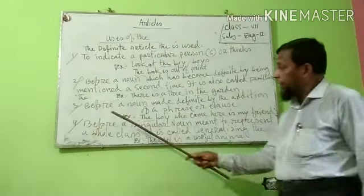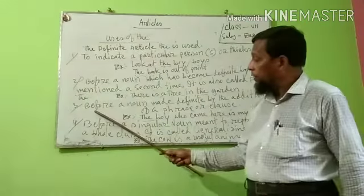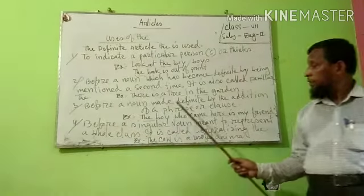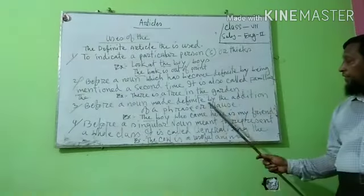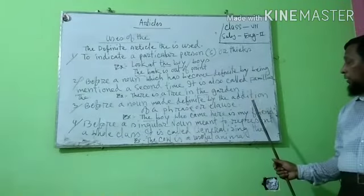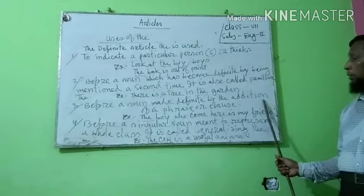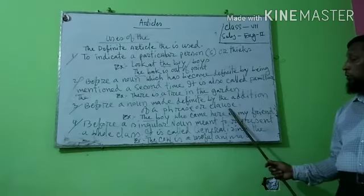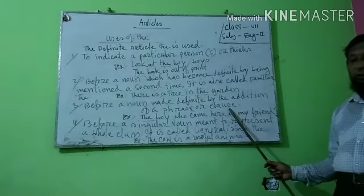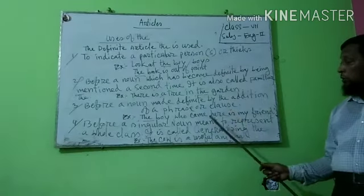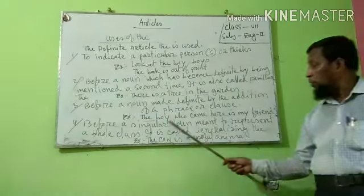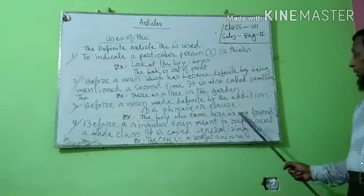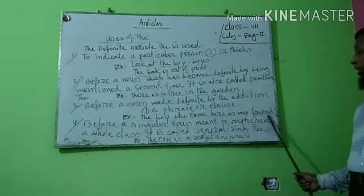Number three: before a noun made definite by the addition of a phrase or clause. Example: The boy who came here is my friend. This is the definite article.